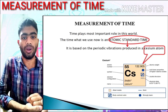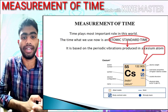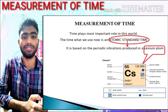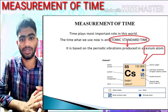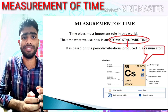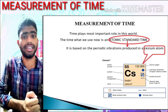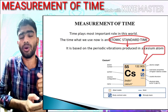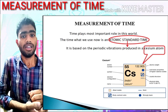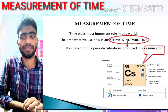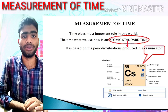We know what time is, what units are available to measure time, and how important it is in our life. It becomes a very important part of our day-to-day life. We always need a clock which tells us the time, because we are all running in a very busy world and we need our work to be finished within a given time. That's why time has become very crucial.